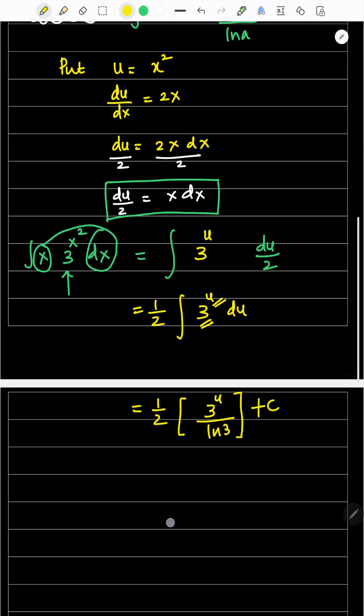But u is the one we used. We need to convert back into x. So, 1/2 bracket open, 3 to the power of what is u, which is x squared, divided by ln 3 plus integrating constant c.